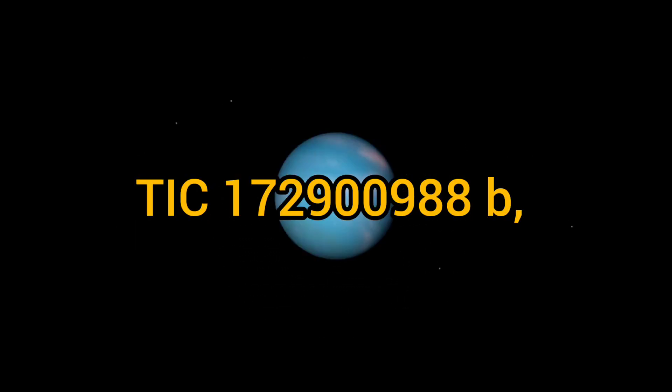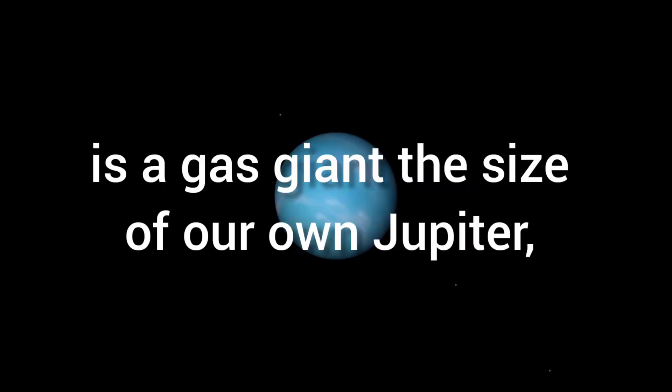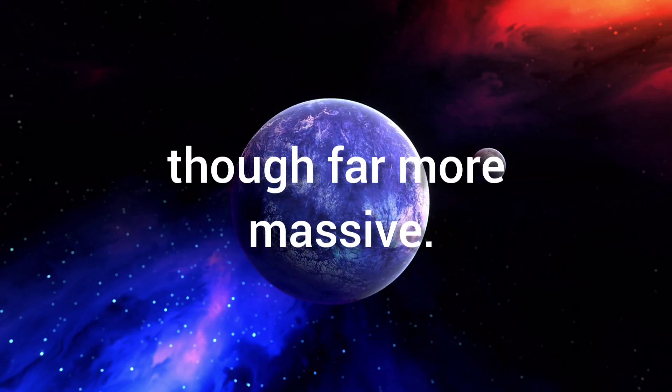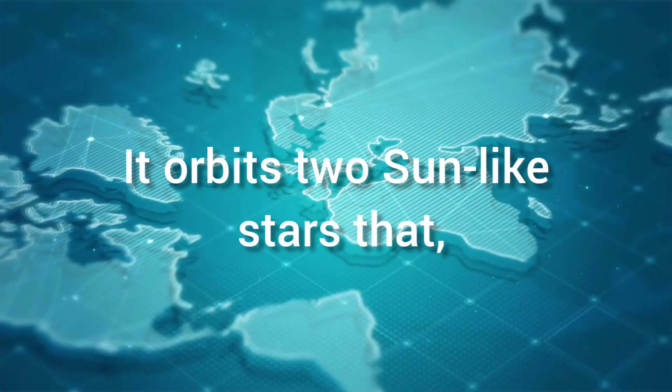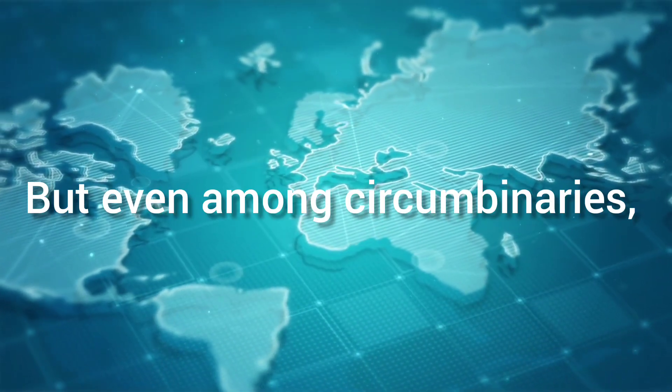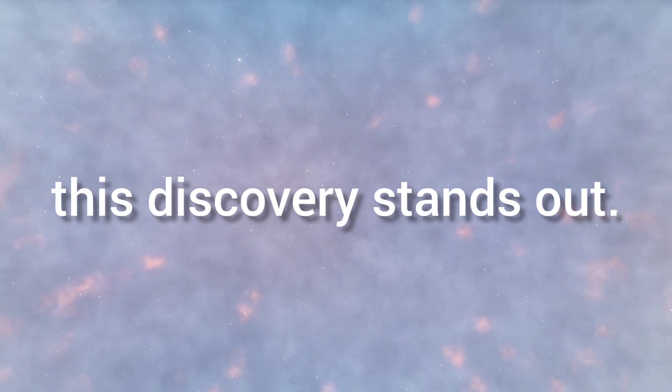The new planet, TIC 172,900,988 b, is a gas giant the size of our own Jupiter, though far more massive. It orbits two sun-like stars that, in turn, orbit each other. But even among circumbinaries, this discovery stands out.